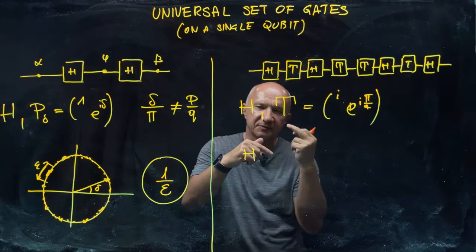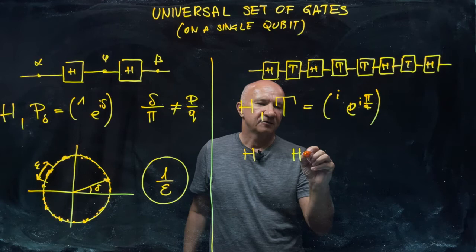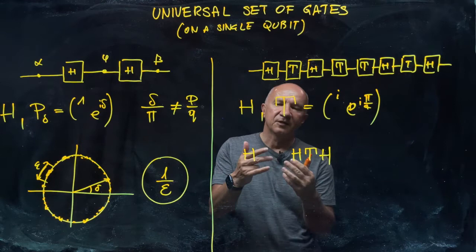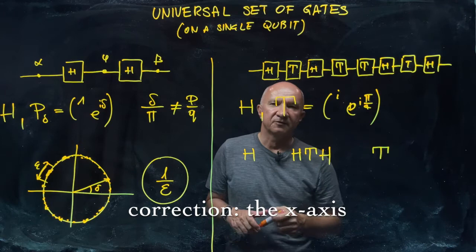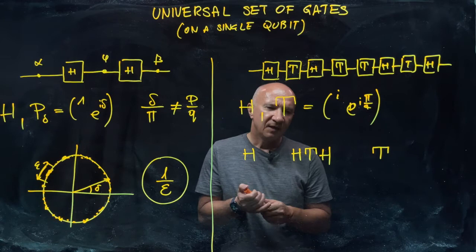And if you look at the gate H, T, H, this sequence is again a rotation by pi over four, by 45 degrees around the X axis. And T itself is the rotation by 45 degrees around the Z axis.